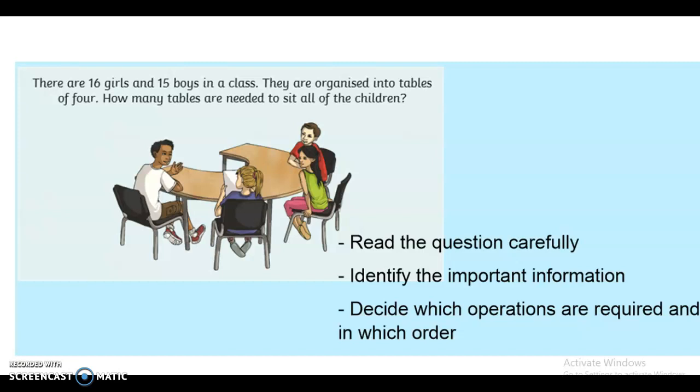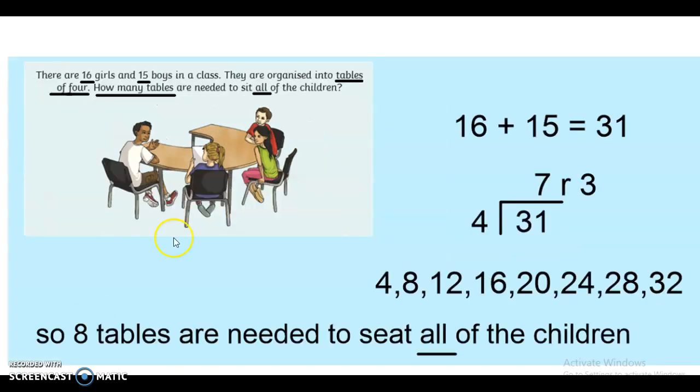So hopefully you have worked out how many tables are needed to sit all of the children. The important information: there are 16 girls and 15 boys. It doesn't actually matter whether they're girls or boys. What you need to work out to start with is how many children there are actually in the class. So, that 16 added to the 15 gives us 31 children in the class. Next bit of important information is that they sit in tables of four. So if those 31 children are each sitting at a table of four, we need to do a division sum to work out how many tables are needed.